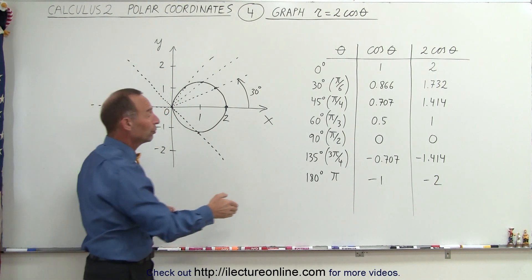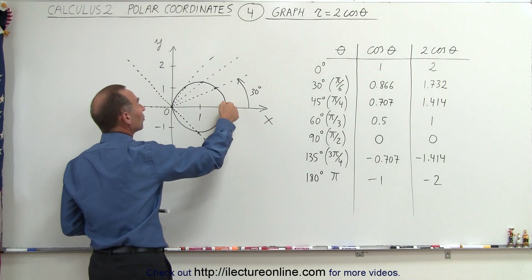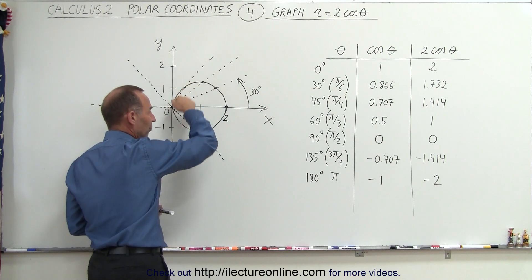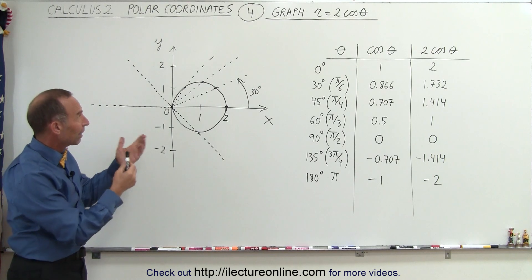Now, if we continue to move through an angle from 180 to 360 degrees, you'll find that we'll just simply go right over this very same circle again, so then we just simply start repeating the function.